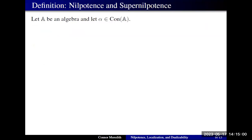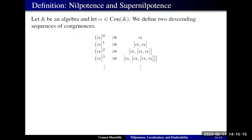We have some notion of the commutator, and from this we can describe nilpotence in two possible ways. Starting with a congruence alpha, one notion of nilpotence comes from the iterated binary commutator — we can repeatedly bracket alpha with itself more and more times. We've seen this notion of nilpotence, this descending sequence of commutators, in groups.